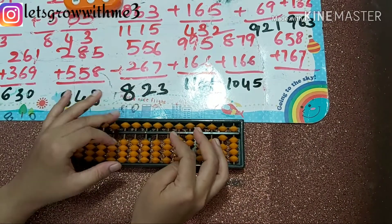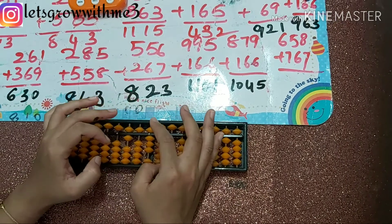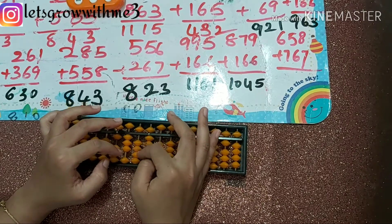Next one: 658 plus 767. Papa, mama, babies up. Plus 6, so papa, mama, babies up.